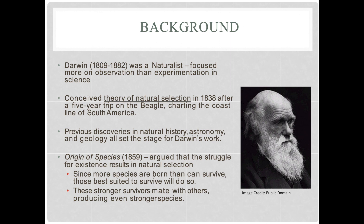The main argument we're focusing on is about the struggle for existence and how that results in natural selection. Essentially, since more species are born than can survive, those best suited to survive will do so. All offspring in a particular species are competing for the same resources, and those that can get the most resources will survive while others will not. These stronger survivors will then mate with other strong survivors, producing even stronger offspring with a better chance of survival.